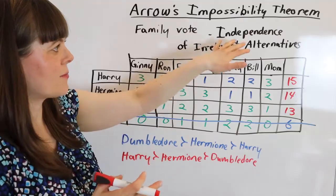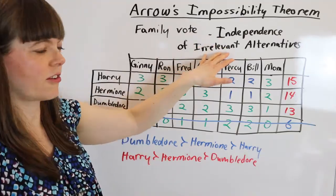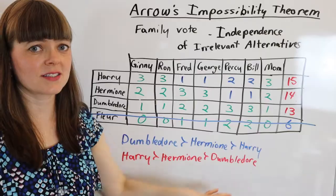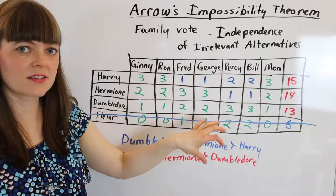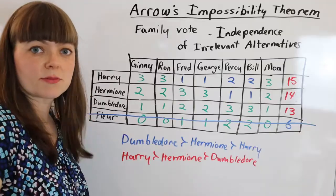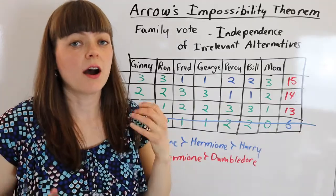That's generally how independence of irrelevant alternatives works. It's a property that says we want to make sure our voting system isn't this manipulatable — this fragile — to the addition or subtraction of new candidates. That's Arrow's impossibility theorem: it proves mathematically that any possible voting system you could come up with is going to violate at least one of those four really reasonable principles.